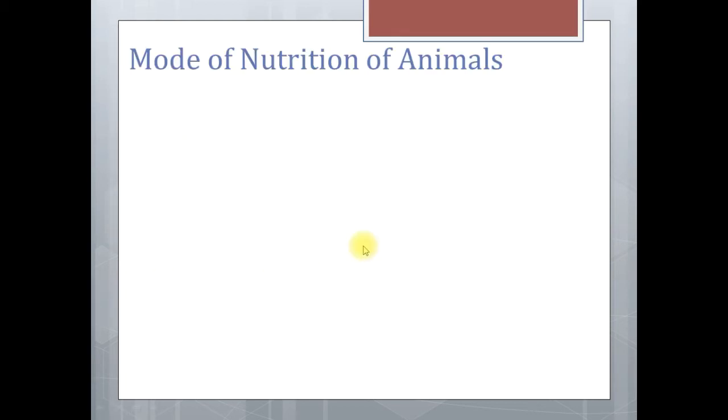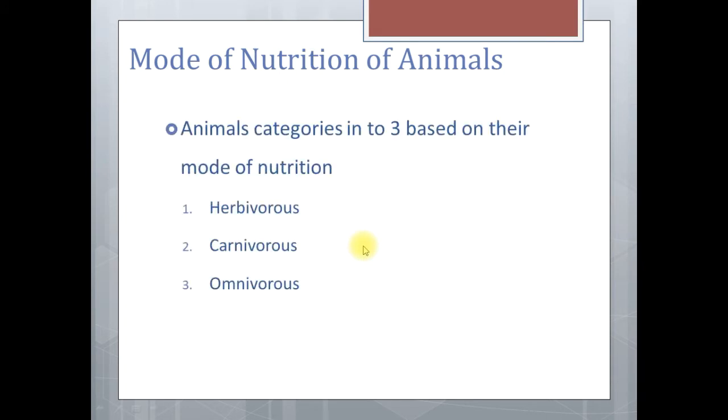Mode of nutrition of animals. Based on the mode of nutrition, animals can be categorized into three groups. They are herbivorous, carnivorous, and omnivorous.